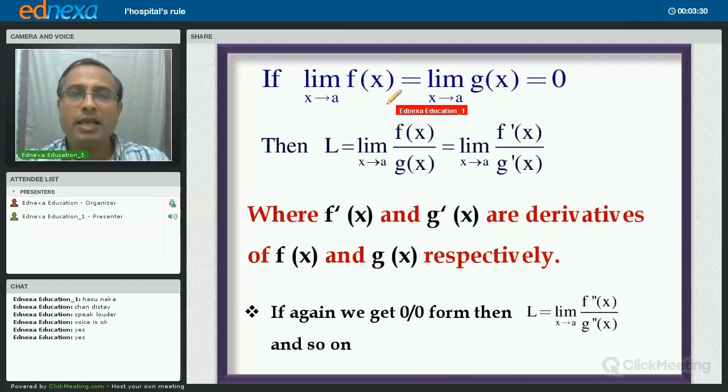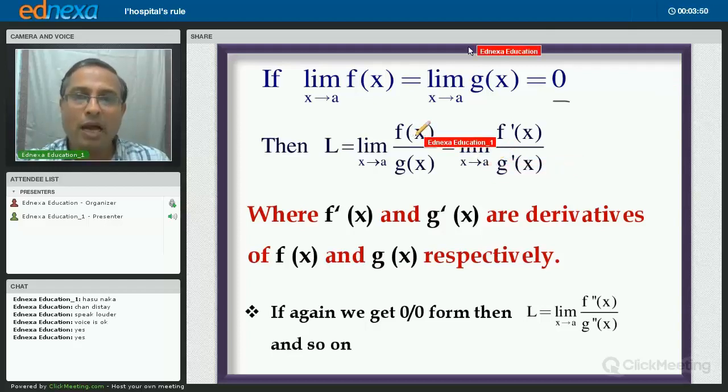If limit f(x) as x tends to a equals limit g(x) as x tends to a equals 0, then L, that is the limit, equals limit f(x) upon g(x) as x tends to a is the same as limit of f'(x) upon g'(x) as x tends to a. Note that I have not used the quotient rule to find the derivative of f(x) and g(x). Numerator and denominator are to be differentiated separately. Where f'(x) and g'(x) are derivatives of f(x) and g(x) respectively.